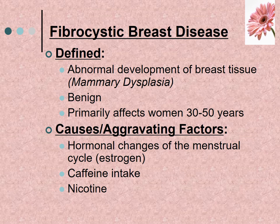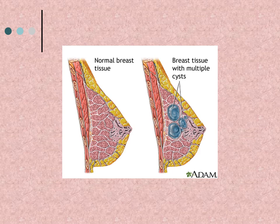Fibrocystic breast disease is abnormal development of breast tissue, also called mammary dysplasia. It is benign and primarily affects women 30 to 50 years of age. It can be caused or aggravated by hormonal changes of the menstrual cycle, specifically estrogen, caffeine intake, and nicotine.